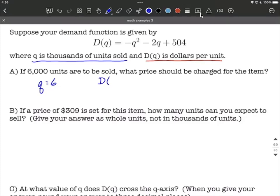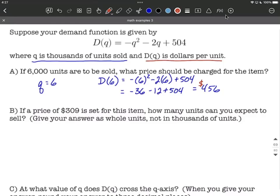So we're going to evaluate the demand when our quantity is 6, given by negative 6 squared minus 2 times 6 plus 504. Negative 6 squared is 36 minus 2 times 6 is 12 plus 504. This works out to be 456. And if we're thinking about what kind of units we're looking at, this is a value for D(6), which is dollars per unit. We used a quantity, plugged it in, got a dollar amount coming out.